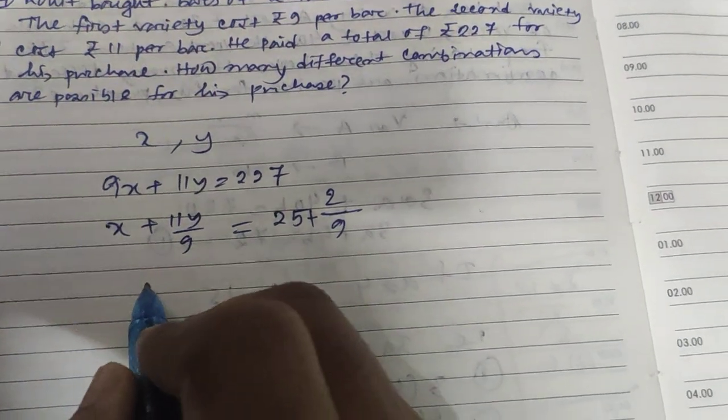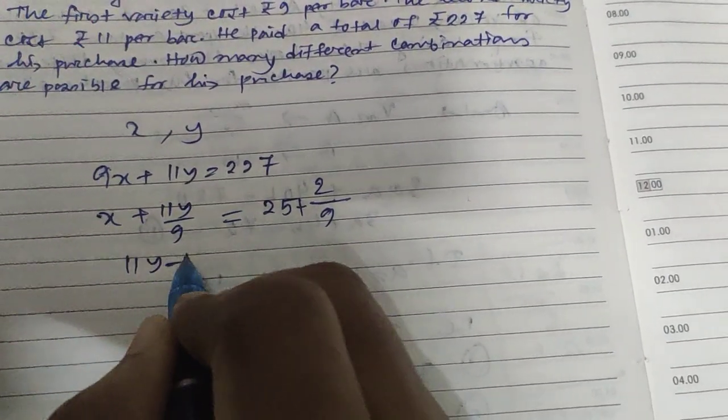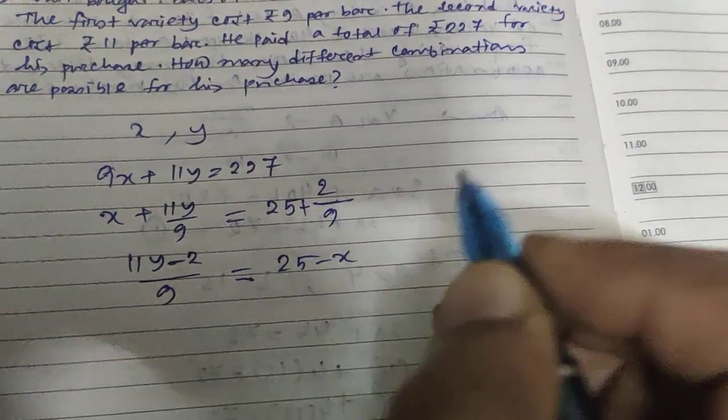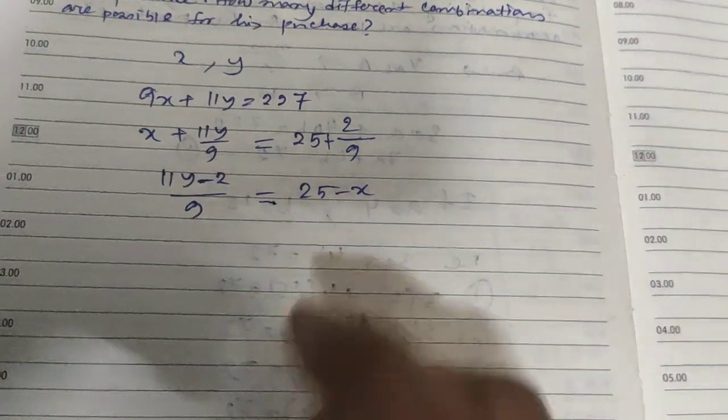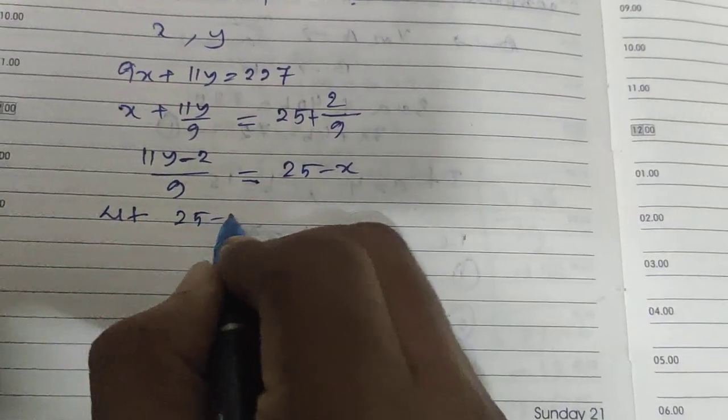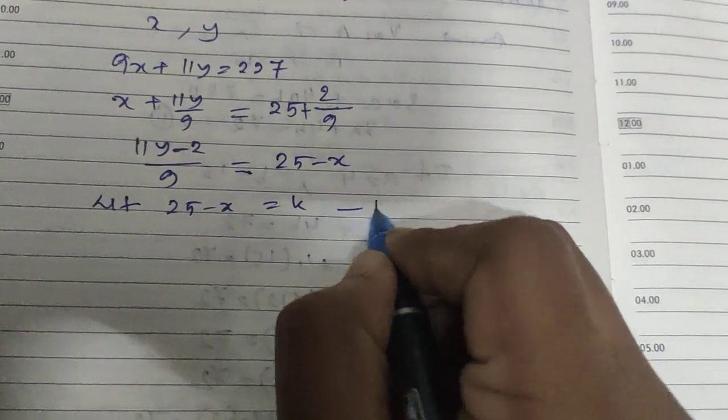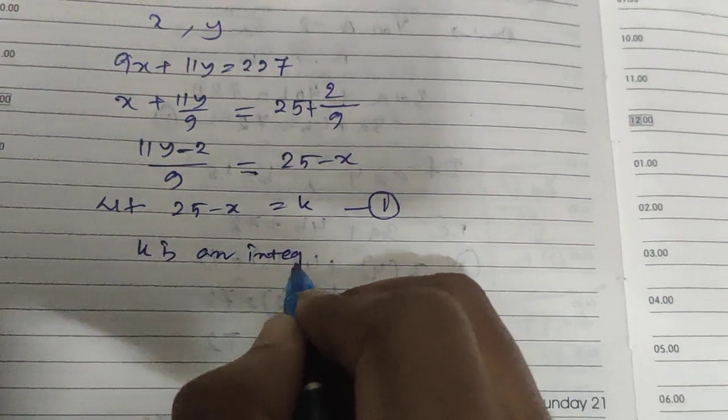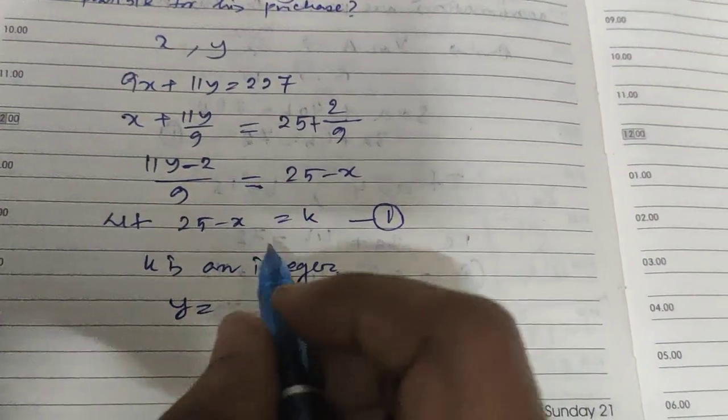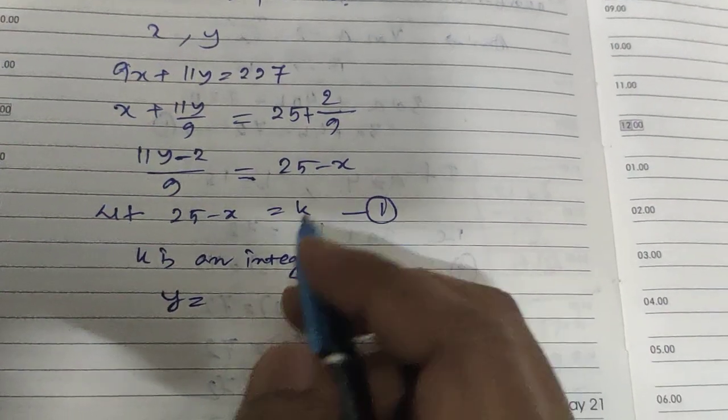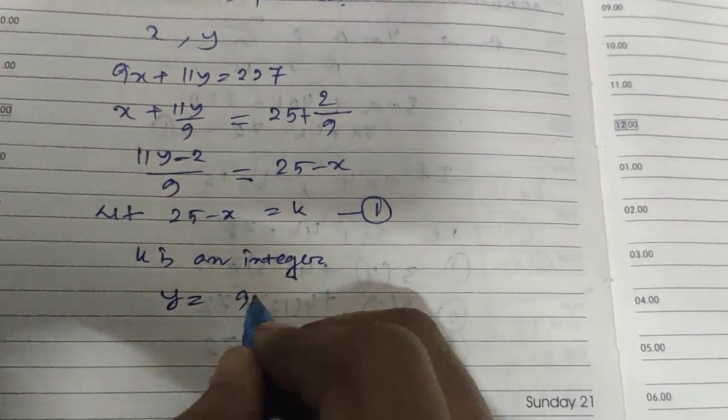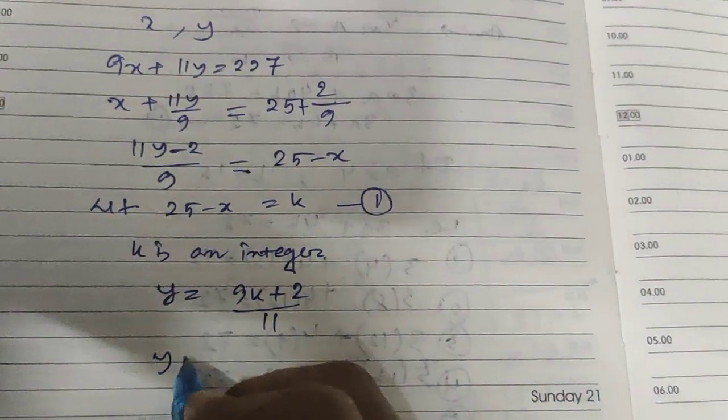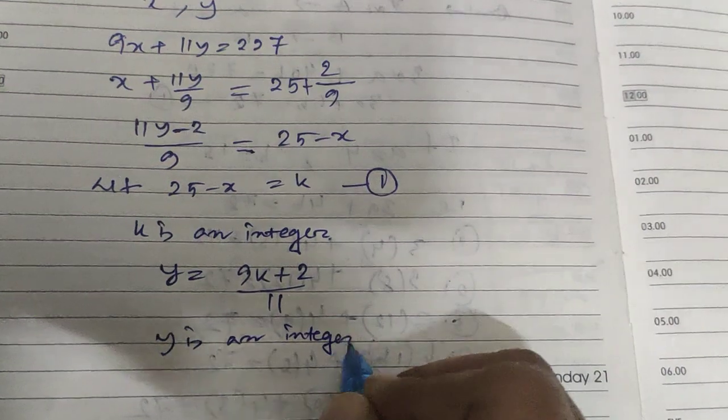So now this is 11Y minus 2 divided by 9 equals 25 minus X. So now let 25 minus X equal K. So K is an integer. So Y equals 9K plus 2 divided by 11. Y is also an integer.